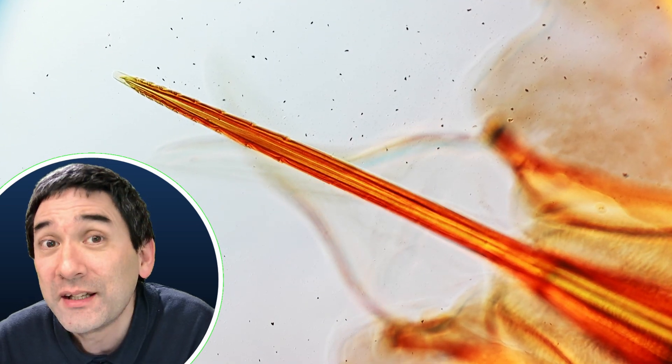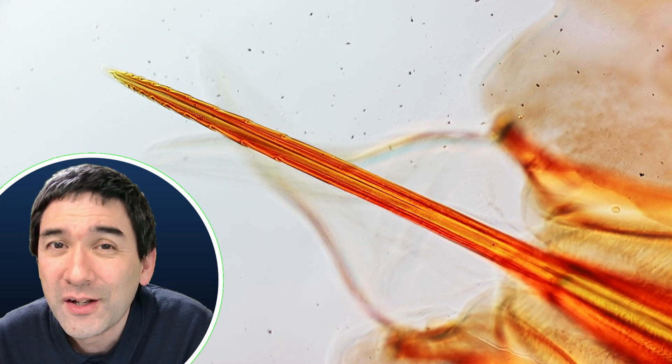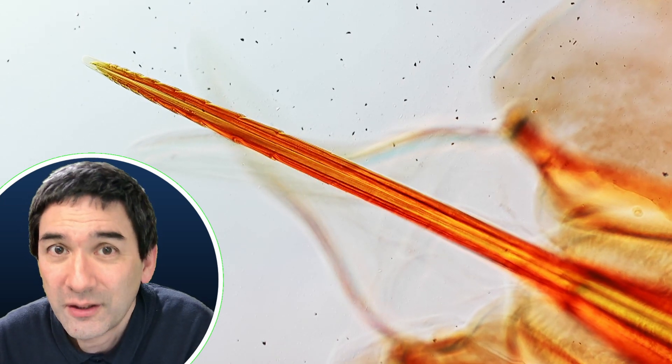This actually means that a bee is not able to pull out the stinger after it stung you. The stinger will remain in your skin and the bee actually will rip apart.